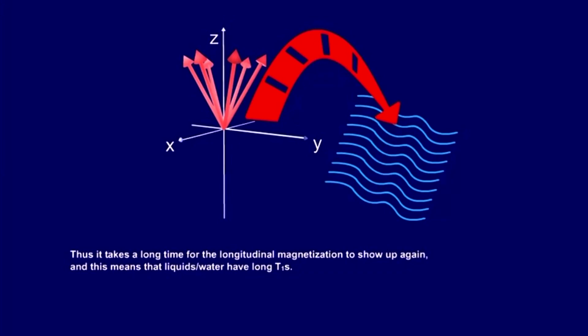Thus, it takes a long time for the longitudinal magnetization to show up again. And this means that liquids, water, have long T1s.